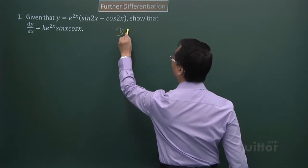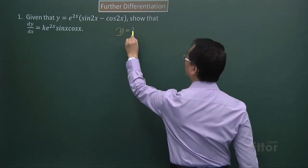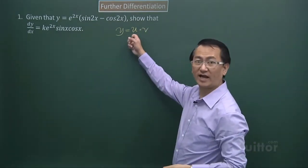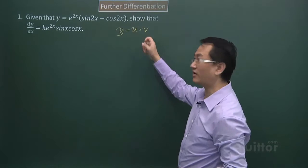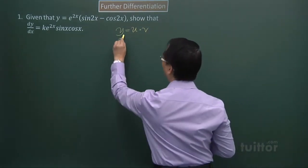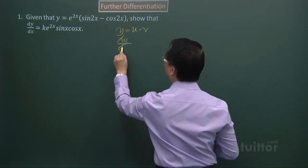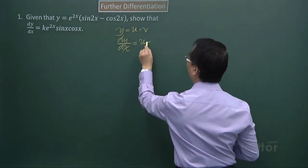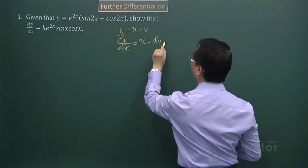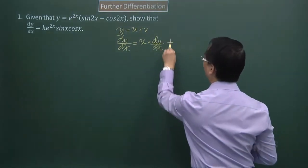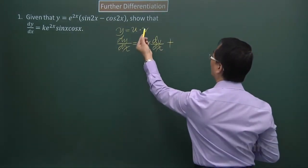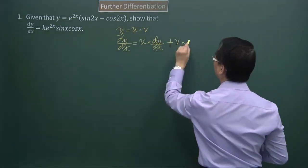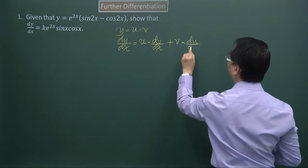So here you go. If you have y equals u times v and u is a function of x and v is a function of x, then the formula would be dy/dx. We keep the u and differentiate the v with respect to x, plus now we keep the v and we differentiate the u, du/dx.